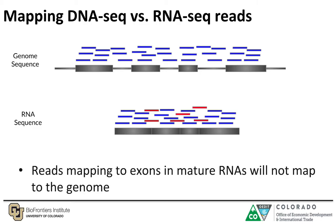In addition to reads mapping to exon regions, you also have reads that will span exons, and these are what we call spliced reads. These spliced reads will not map back to the genome, and therefore one would need a splice-aware aligner that would be able to identify where these spliced reads are and how to assign them to a particular transcript.